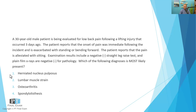To recap: 30-year-old male evaluated for low back pain following a lifting injury three days ago; pain onset was immediate, exacerbated with standing or bending forward, alleviated with sitting; negative straight leg raise test; plain film x-rays negative for pathology. Which of the following diagnoses is most likely present? One: herniated nucleus pulposus. Two: lumbar muscle strain. Three: osteoarthritis. Four: spondylolisthesis.